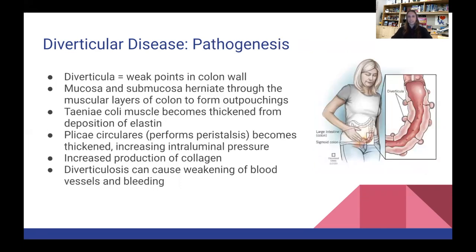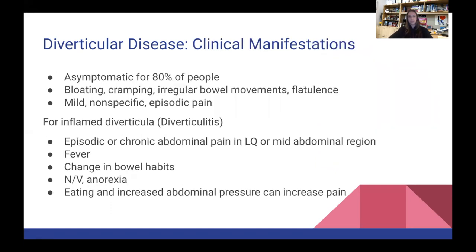Pathogenesis: diverticula are weak points in the colon wall where the mucosa and submucosa herniate through the muscular layers, forming outpouchings. The taeniae coli and plicae circularis muscles become thickened, increasing intraluminal pressure. There's also increased production of collagen, and diverticulosis can cause weakening of blood vessels and bleeding. It's asymptomatic for 80% of people. If symptoms occur, you'll experience bloating, cramping, irregular bowel movements, flatulence, and mild nonspecific pain. When it becomes diverticulitis — inflamed — you'll have episodic or chronic abdominal pain in the lower or mid-abdomen, fever, change of bowel habits, nausea, vomiting, anorexia, and anything increasing abdominal pressure worsens the pain.